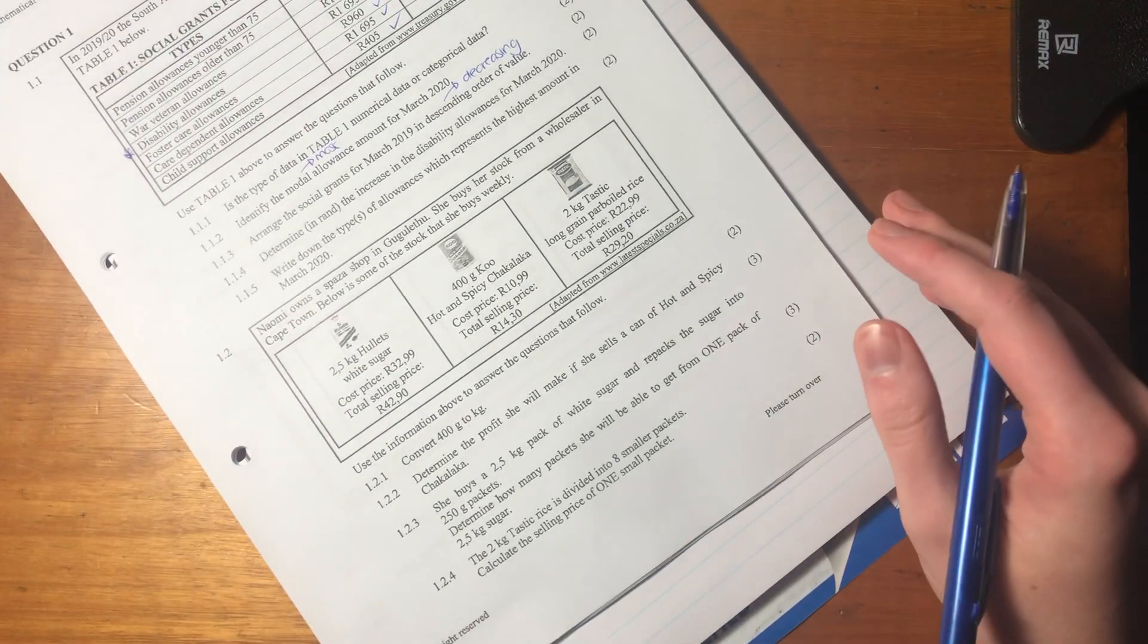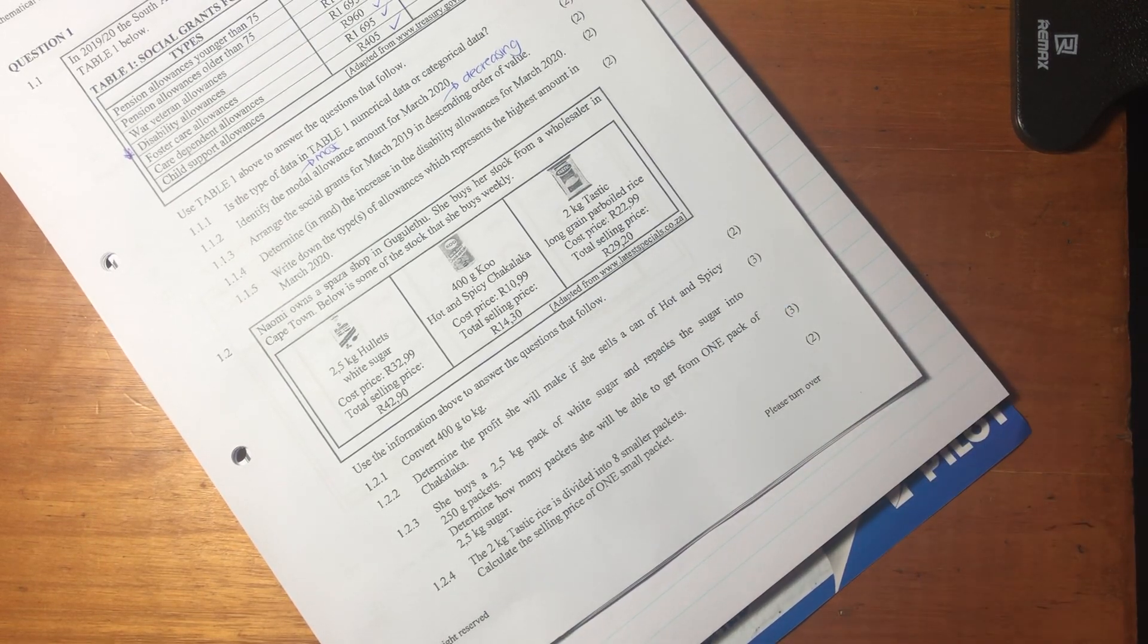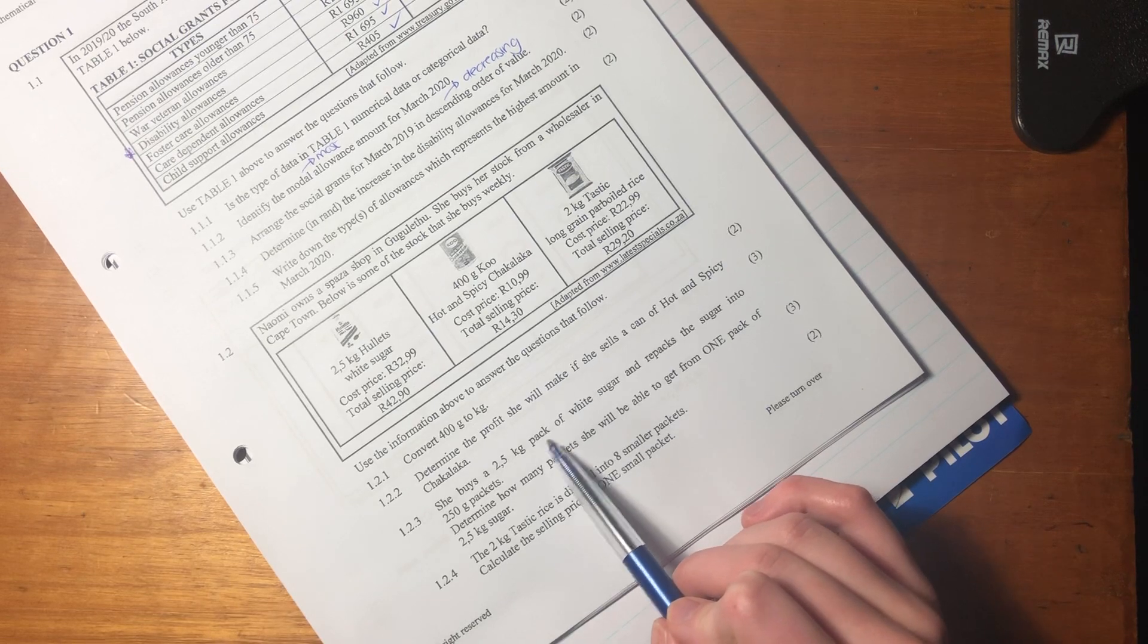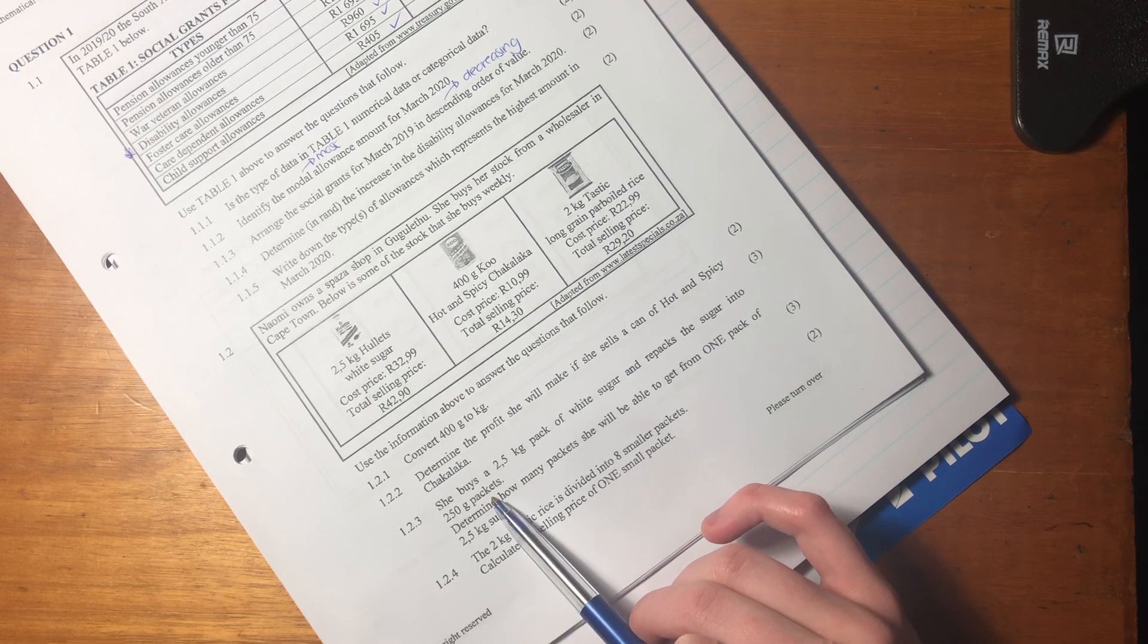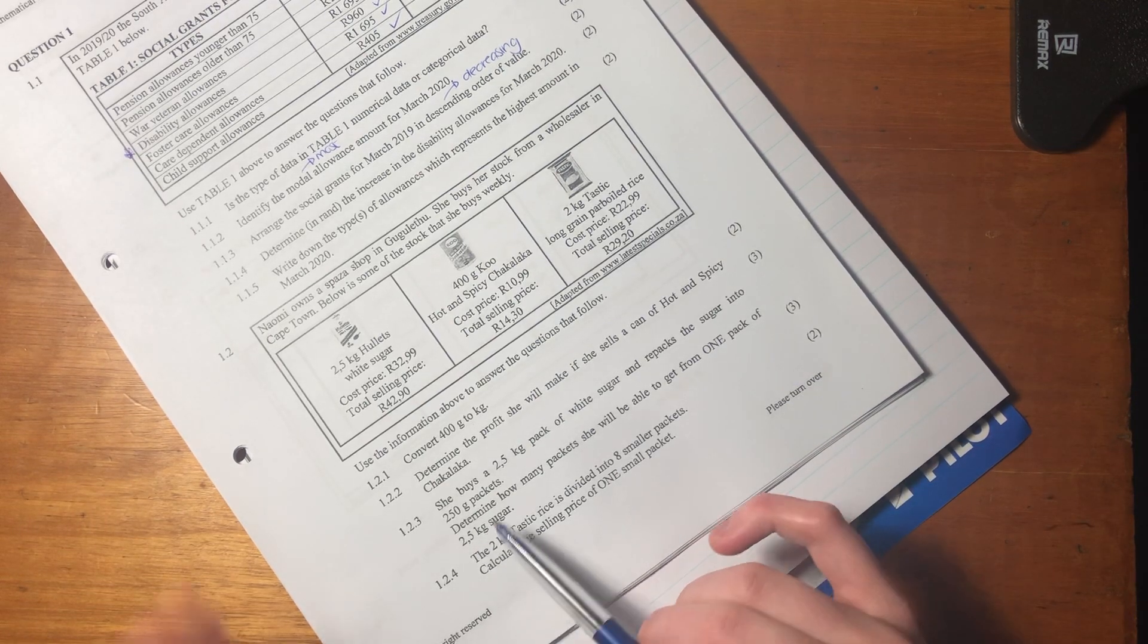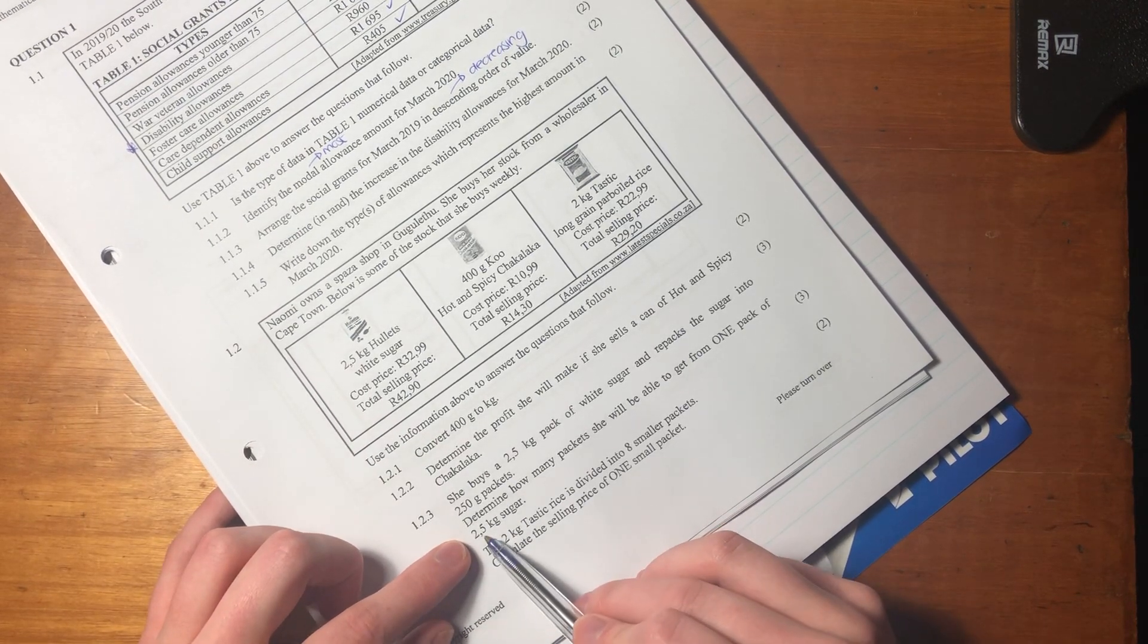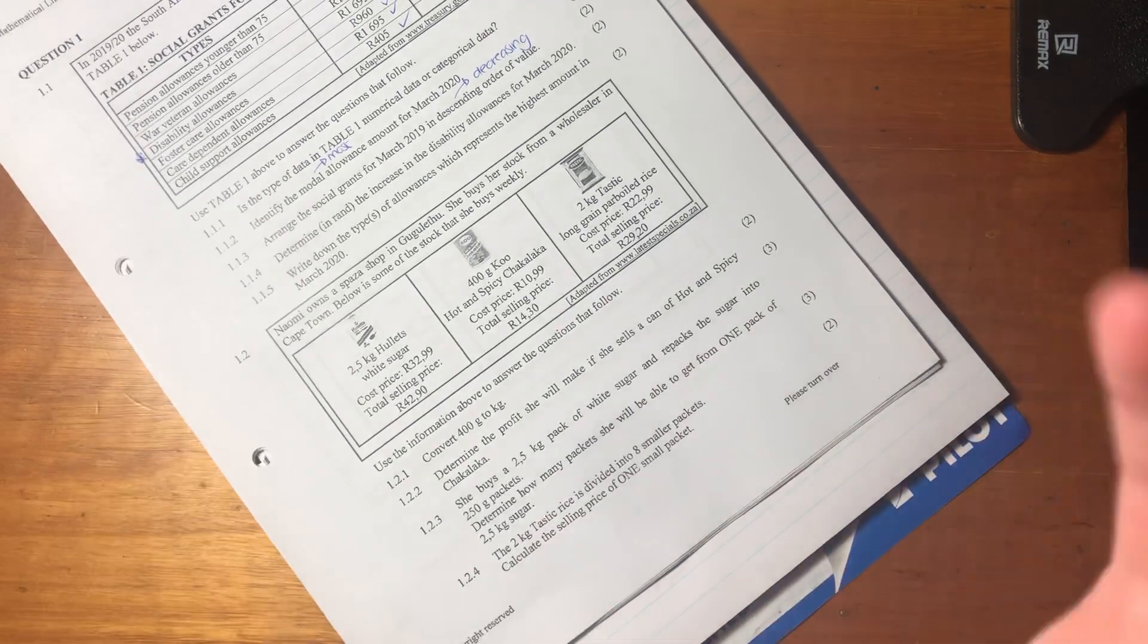Let's move on to 1.2.3. This is an interesting question because it comes across as being quite difficult, but if we break it down into pieces, it's actually not too bad. It says she buys a 2.5 kg bag pack of white sugar and repacks the sugar into 250 gram packets. Determine how many packets she'll be able to get from one pack of 2.5 kgs of sugar.